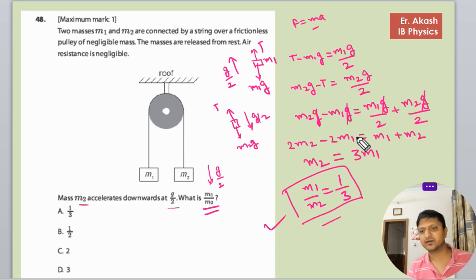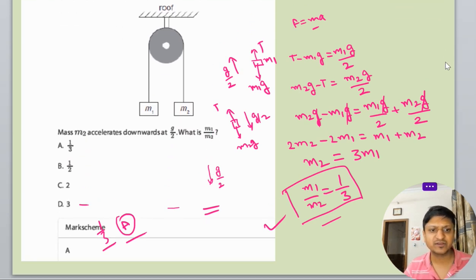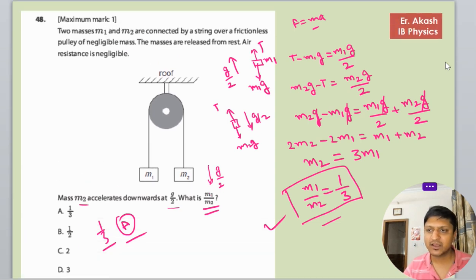We just have to solve the equations. From options A, B, C, D, 1/3 is the A option, so A is the right option. Now we'll check the mark scheme. The mark scheme says A option is the right answer. Hope your doubt is clear. Thank you for watching this video.